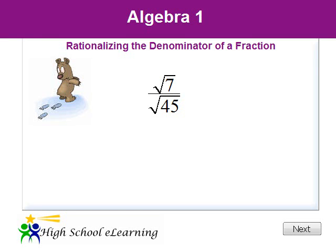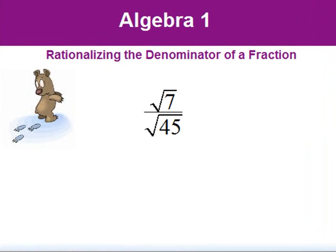Let's look at how to rationalize the denominator of this fraction: the square root of seven over the square root of forty-five. When we get rid of the radical sign in the denominator of a fraction, we say that we have rationalized the denominator.